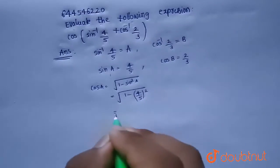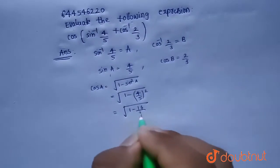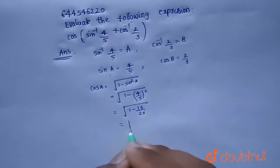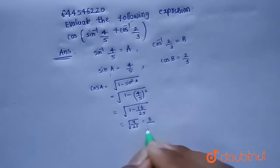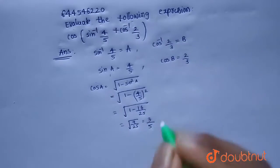And that is root over 1 minus 16 by 25, which will be equals to root over 9 by 25. And we know that root 9 is 3 and root 25 is 5, so that will be equals to 3 by 5.